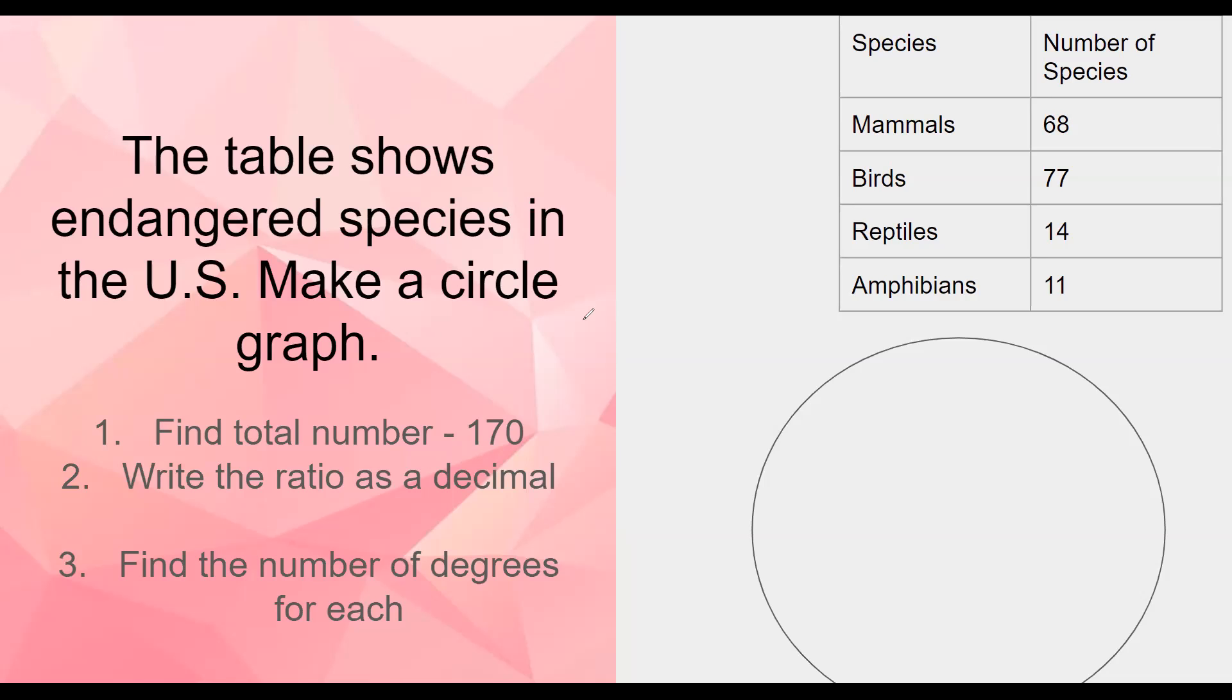So for mammals, my ratio that I'm gonna turn into a decimal would be 68 out of 170. Birds, this would be out of 170, this would be out of 170, and this would be out of 170. Where I got the 170 is by adding 68, 77, 14, and 11 together and getting that total number. So because this isn't a percent, it shouldn't - it could end up being 100, but it's not necessarily going to be 100 since it's not talking about a percent, it's just talking about a number of species out of a total.